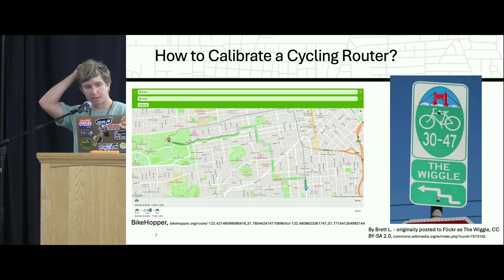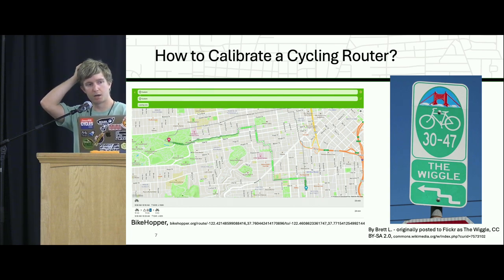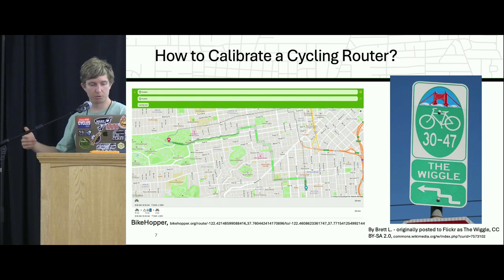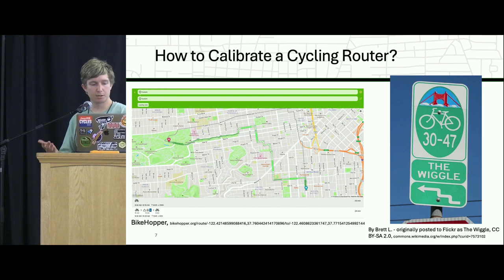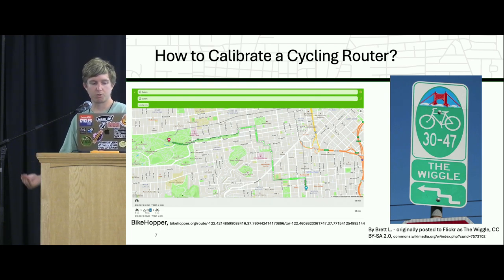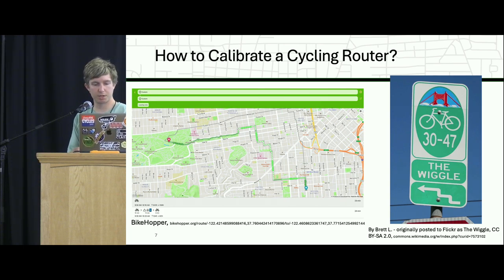The big question is always: how do you actually calibrate a cycling router? I was talking to some of the developers of Bike Hopper, which is an open source routing software used in the Bay Area. One of the things they showed me is that they use a route called the Wiggle in San Francisco — it goes between two neighborhoods and is essentially a way to avoid going up a lot of hills. It's a relatively low-stress route, but it's really just a mixed street with cars, nothing special bike-infrastructure-wise. But often routers get this wrong and send you up a steep street or put you on a street that might not be steep but is really busy.